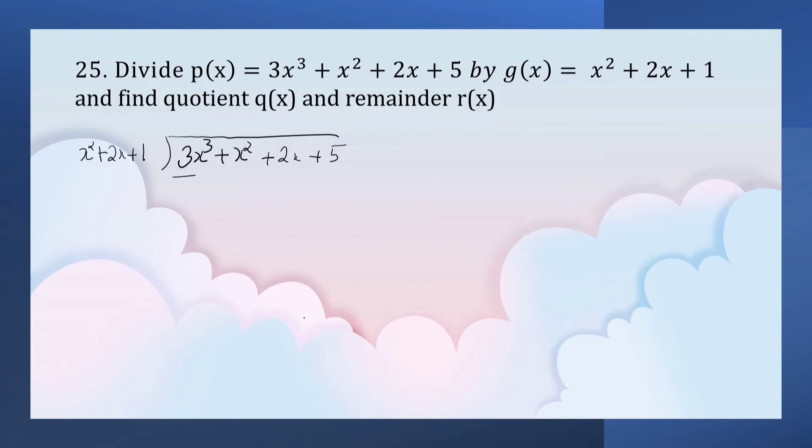The first term of p(x) is divided by the first term of g(x), 3x³ by x², equals 3x. 3x into x² equals 3x³, plus 3x into 2x equals 6x², plus 3x into 1 equals 3x.